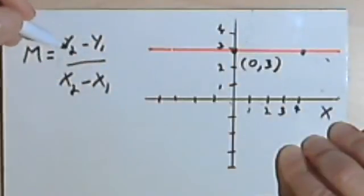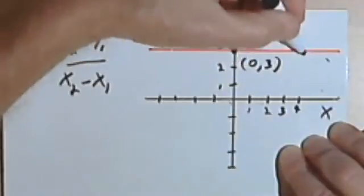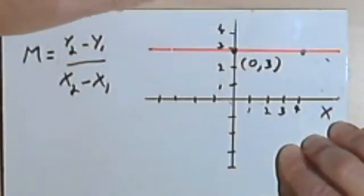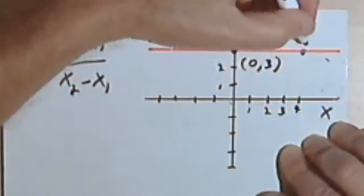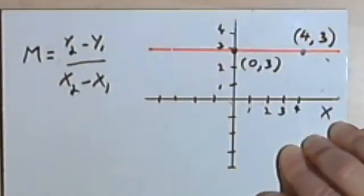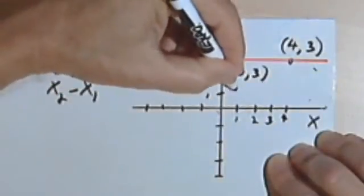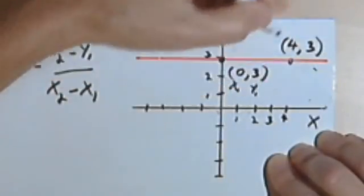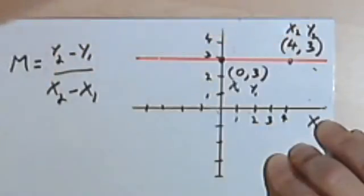So we need two points. We've got a point here already, that's the 0,3, and we'll take this point. This point looks like it's at 4, so this would be 4,3. And we could call this x sub 1 and y sub 1, x sub 2 and y sub 2.